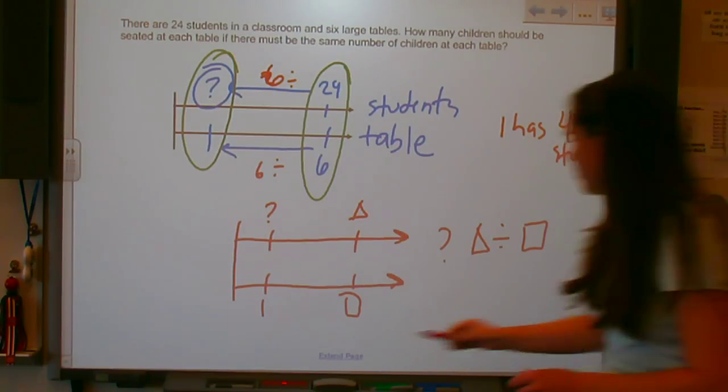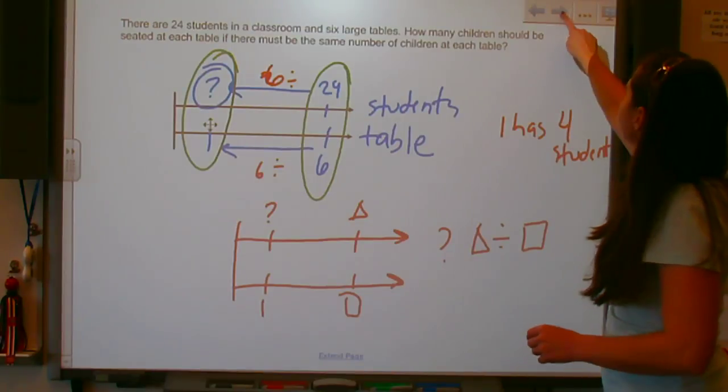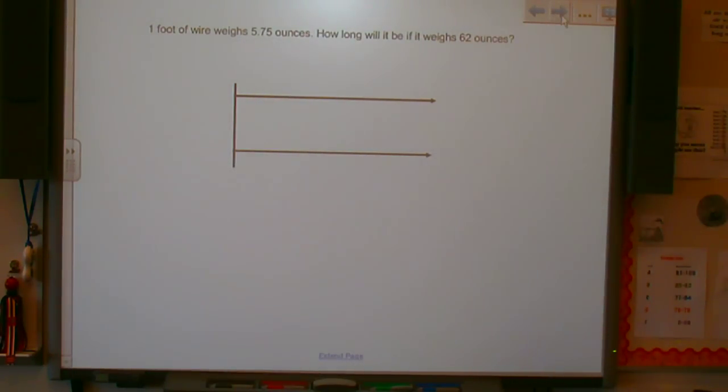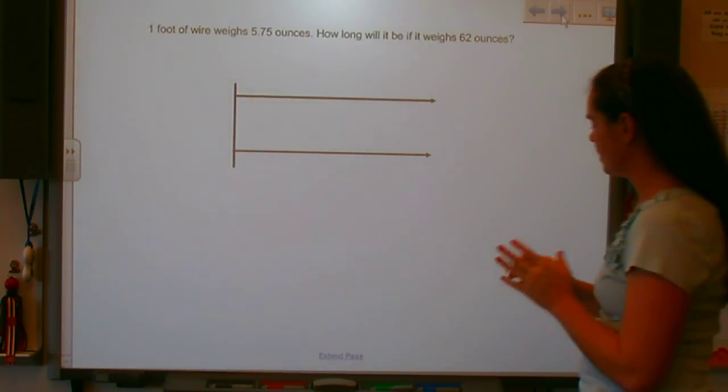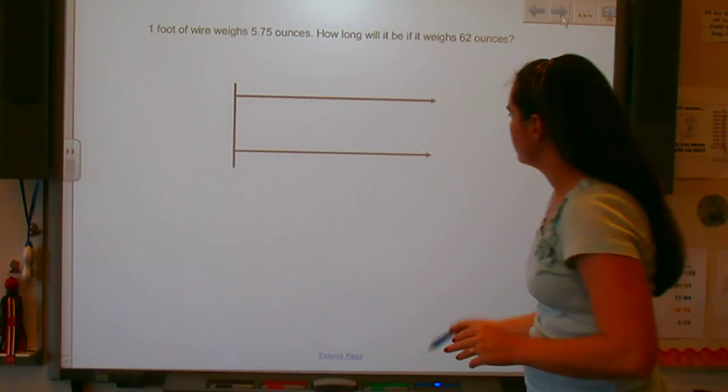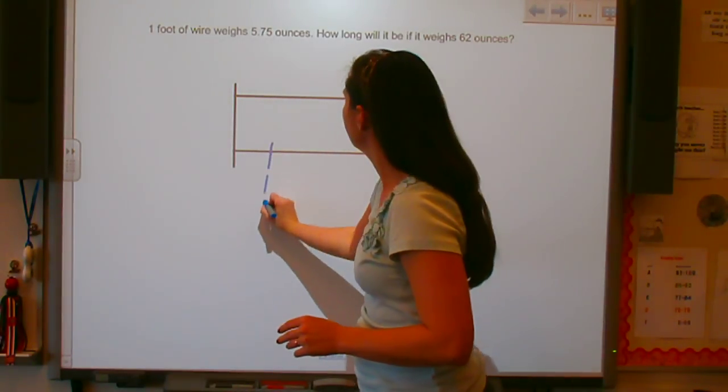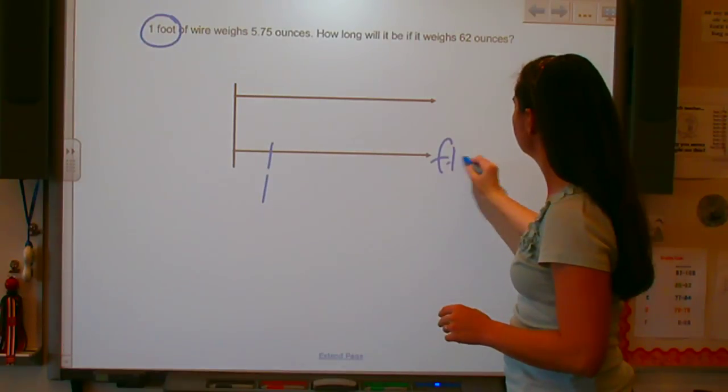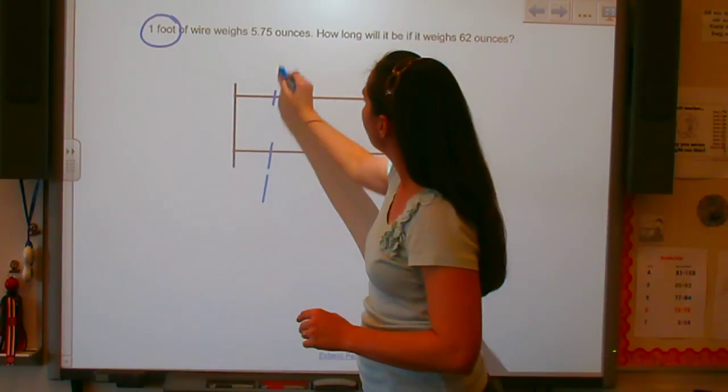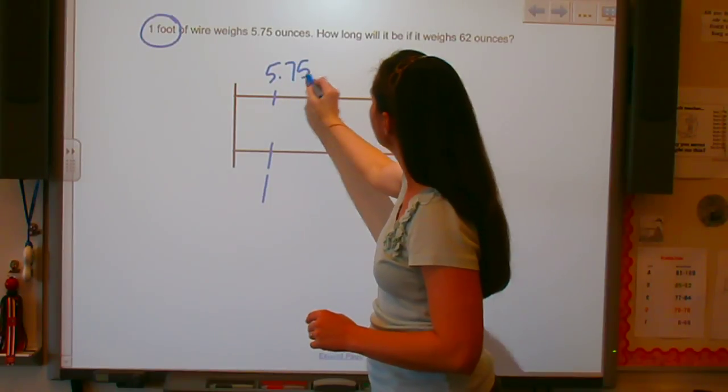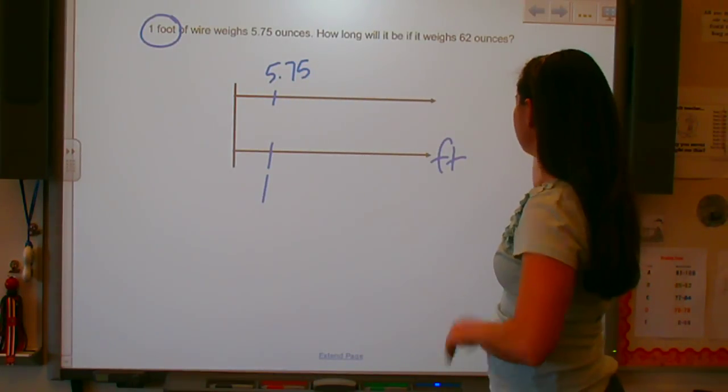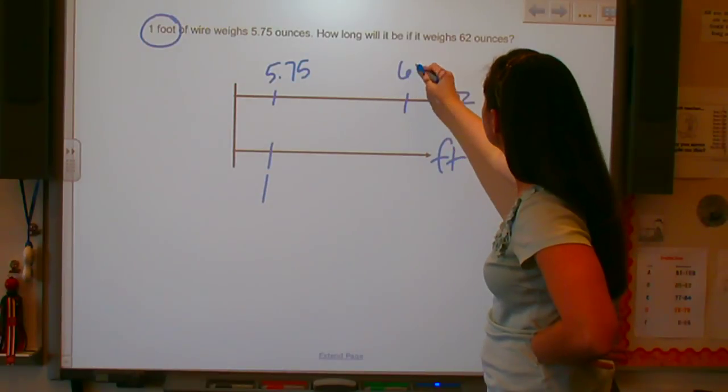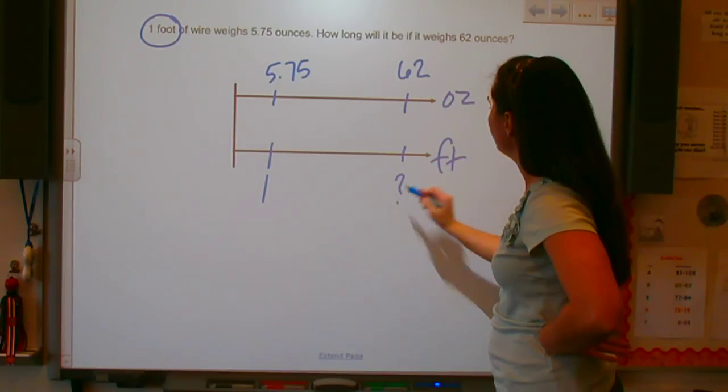Let's look at our next example. One foot of wire weighs 5.7 ounces. How long will it be if it weighs 62 ounces? So I have my one and it's one foot. So foot weighs 5.7 ounces. How long will it be if it weighs 62 ounces? So here's my ounces. So 62, and I do not know.